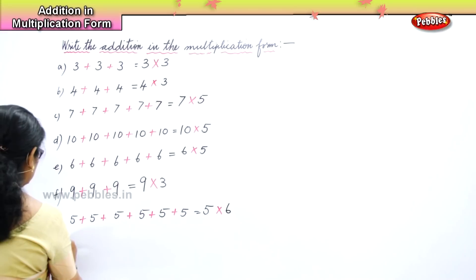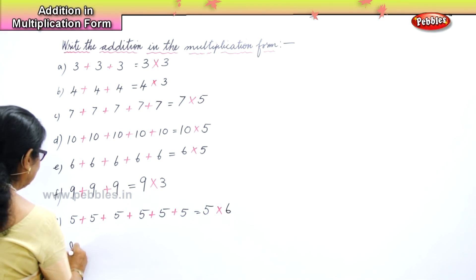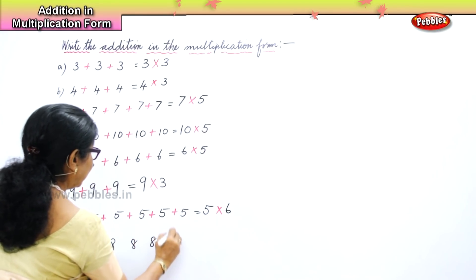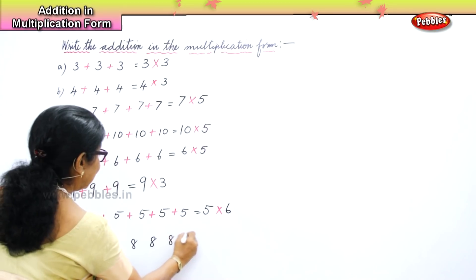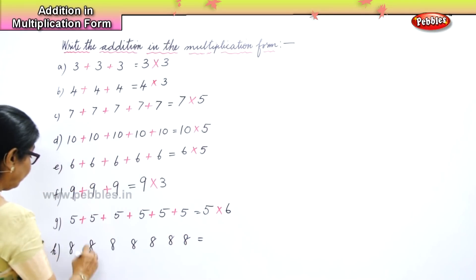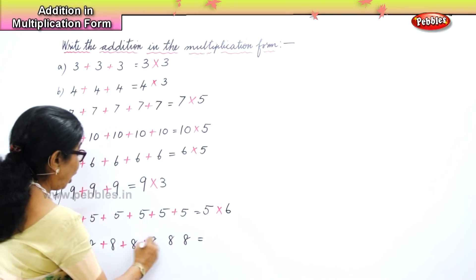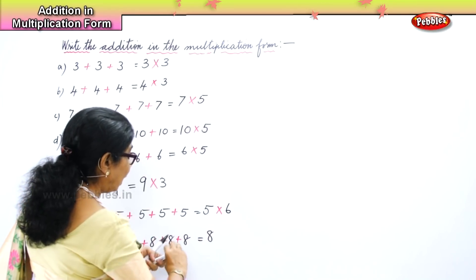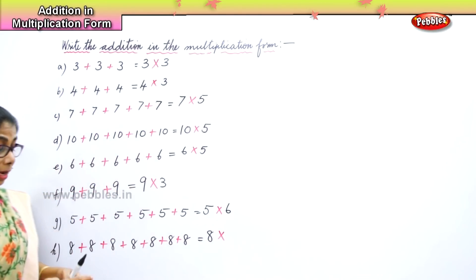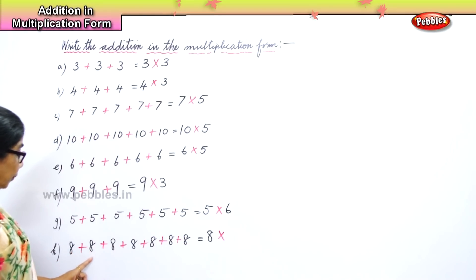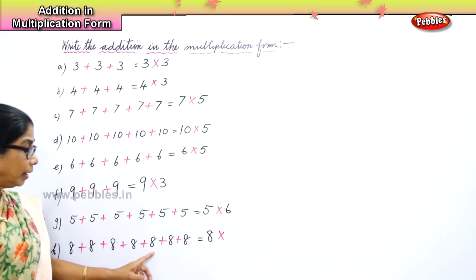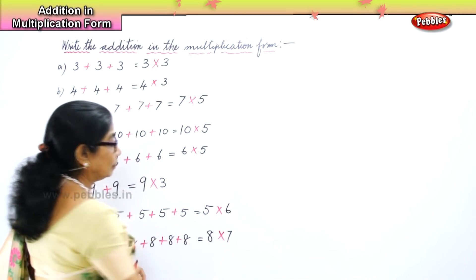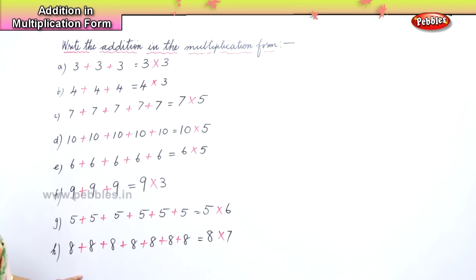Let's take number 8. Count: 1, 2, 3, 4, 5, 6, 7. You put number 8, then write how many times — count: 1, 2, 3, 4, 5, 6, 7 — so 8, 7 times.